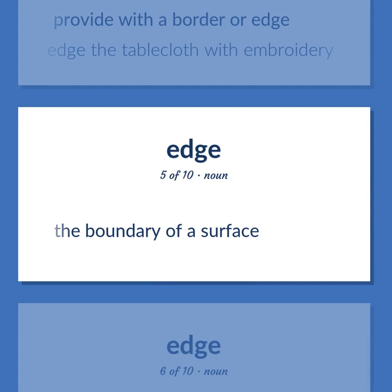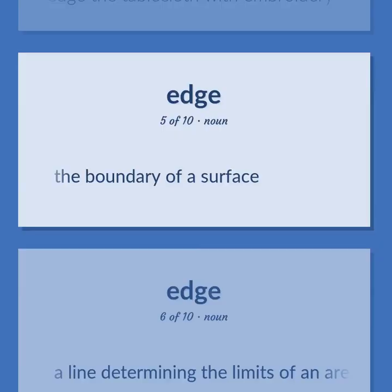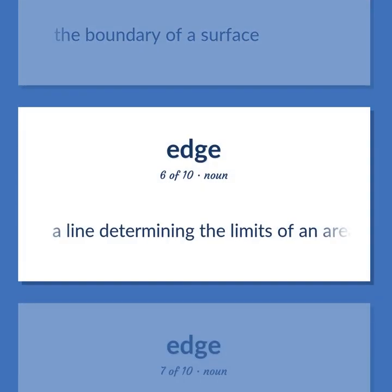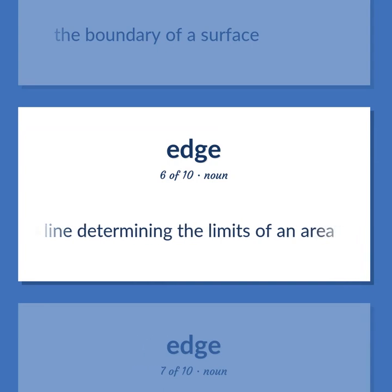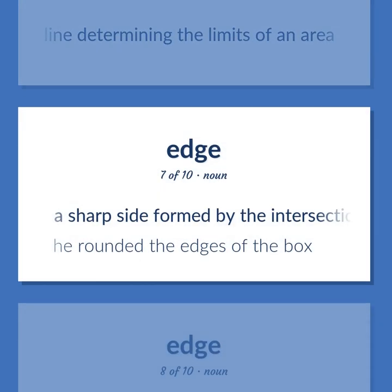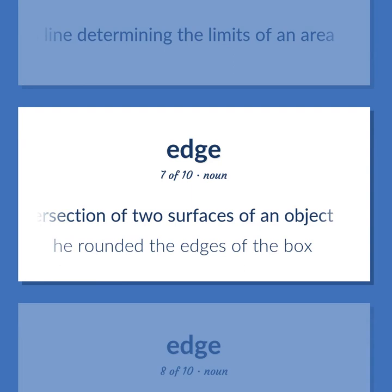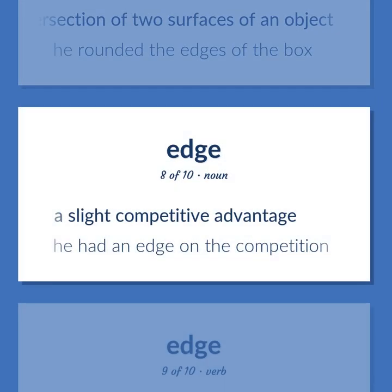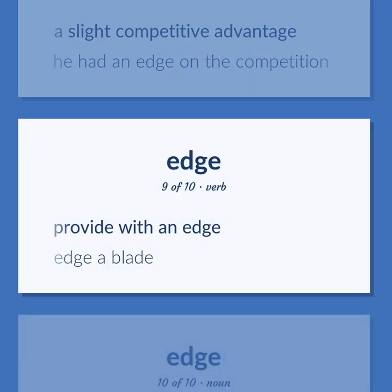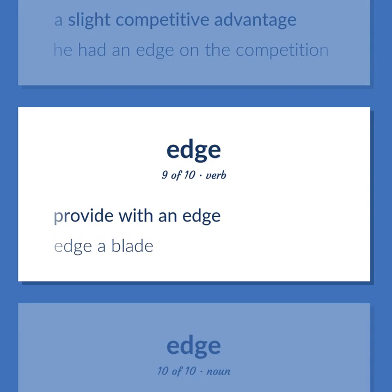EDGE (continued): The boundary of a surface. Align, determining the limits of an area. A sharp side formed by the intersection of two surfaces of an object — 'he rounded the edges of the box.' A slight competitive advantage — 'he had an edge on the competition.' Provide with an edge — 'edge a blade.'